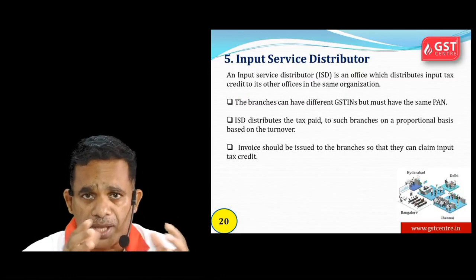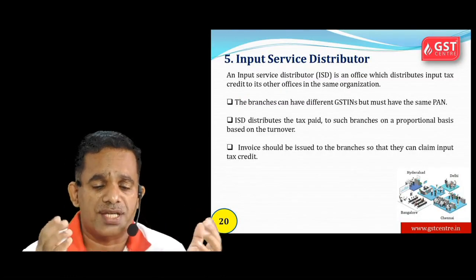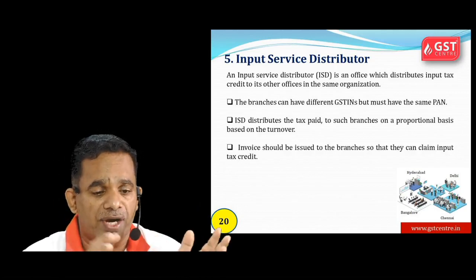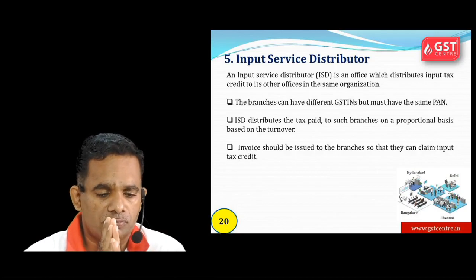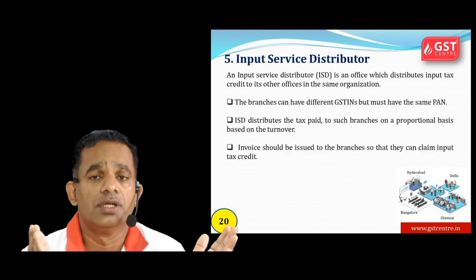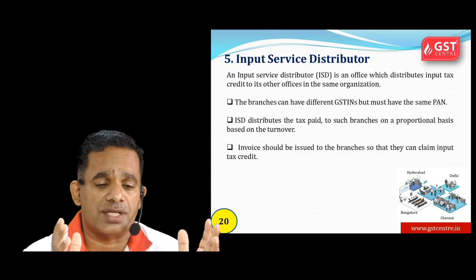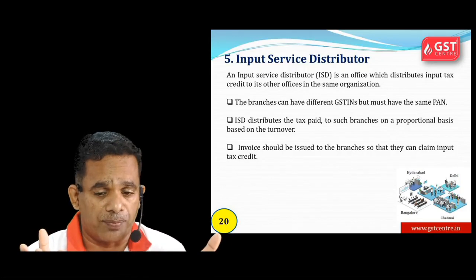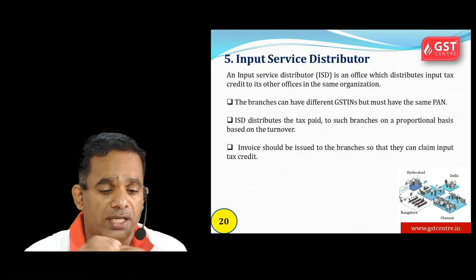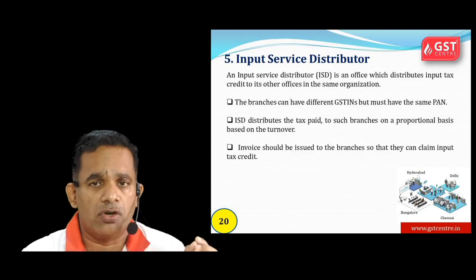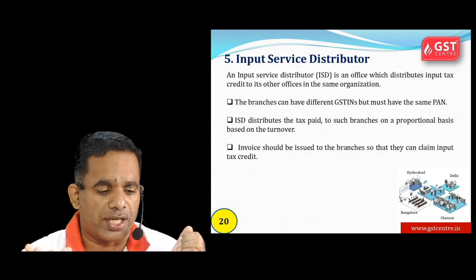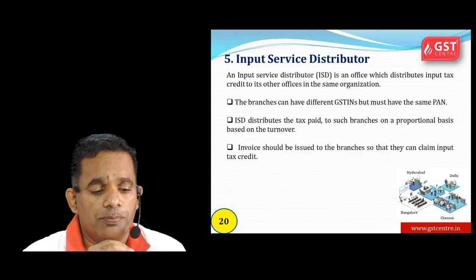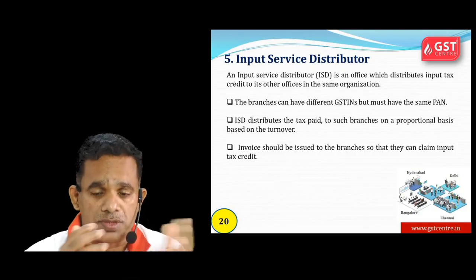Input Service Distribution (ISD): this is a concept where an organization's head office distributes input tax credit to its branch offices. A condition is that the branches have different GST numbers (different states) but the same PAN card. The main/head office distributes input tax credit in the ratio of the turnover of each branch.